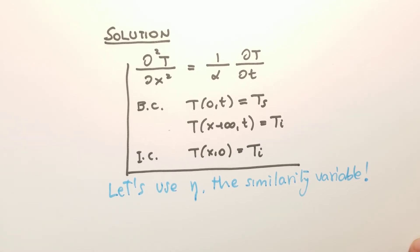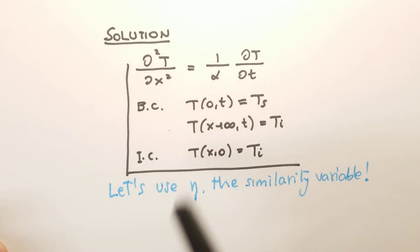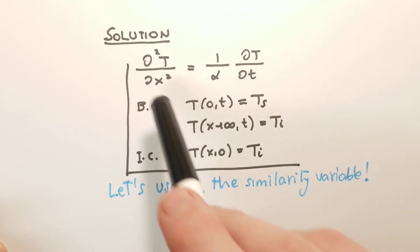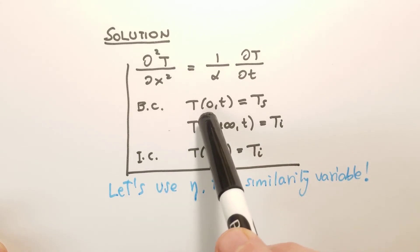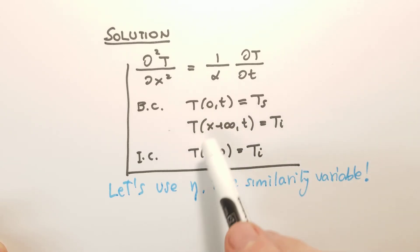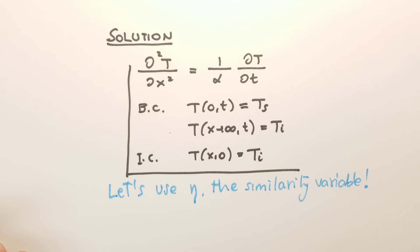Now let's look at this problem mathematically. To solve it, we start from the heat conduction equation: the second partial derivative of temperature with respect to x equals 1 over alpha times the partial derivative of temperature with respect to time. It is one-dimensional — only one spatial coordinate x. The boundary conditions are: at x equals zero (the surface), temperature equals Ts at any time; and at x going to infinity, temperature equals Ti at any time. The initial condition is: at time equals zero, the temperature at any location x equals Ti.